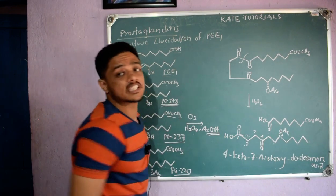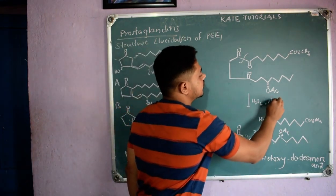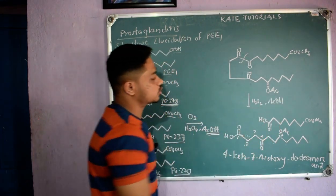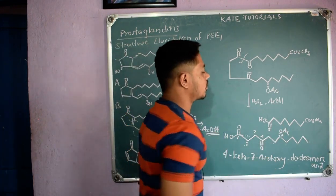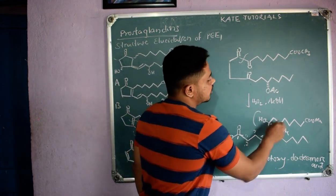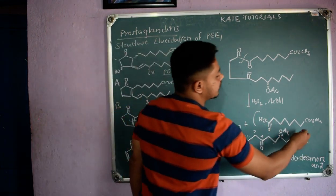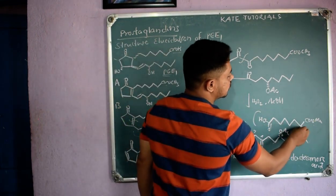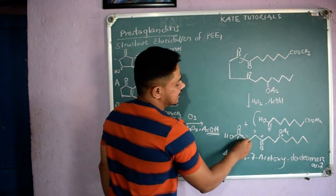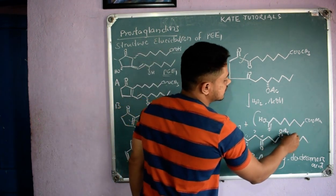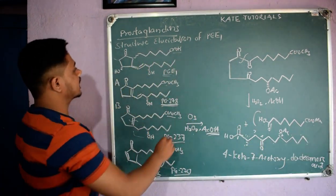So the compound obtained is 7-acetoxy-4-ketododecanoic acid. When they did this degradation using ozonolysis with oxidizing agent in acetic acid they got these two products. Counting carbons in both products — one through eighteen and one through twenty — they confirmed that prostaglandins have 20 carbons.